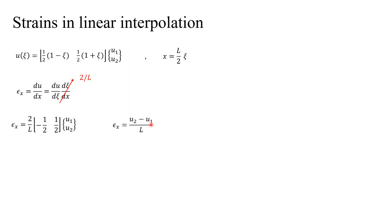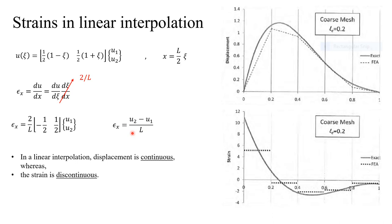Multiplying these matrices gives the strain as (u2 - u1)/L — which is what we expected: the displacement of the second node minus that of the first, divided by the length of the element. More importantly, this value is constant. For a linear interpolation, taking the derivative of a linear function yields a constant, so the strains are constant within each element. The displacement is continuous, but the strains are discontinuous between elements.